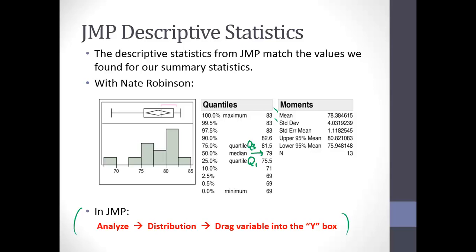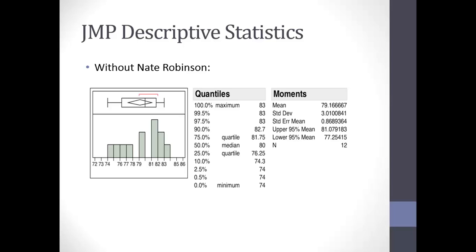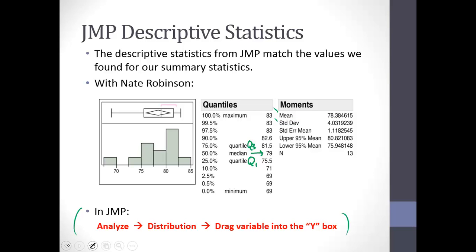All that work we did to calculate these things — we're not going to worry about that as much. To show that we can also do the same thing if we take away Nate Robinson's observation from the data set: note that our standard deviation goes down to the 3.01 we just mentioned, and we have all the other information there as well. If you know how to make a histogram in JMP, you already know how to get all this information. Any final questions before we move along?